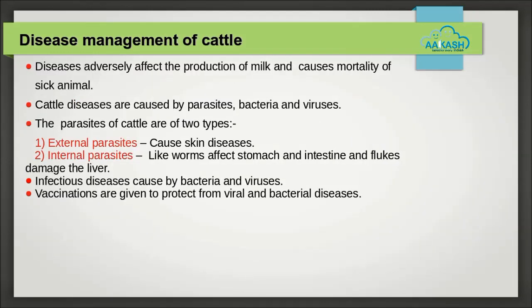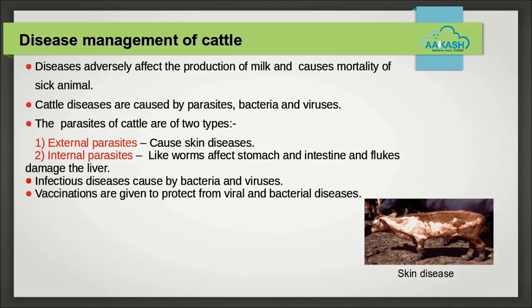Disease management of cattle: healthy animals feed regularly and have normal posture. Diseases adversely affect milk production and cause mortality of sick animals. Cattle diseases are caused by parasites, bacteria, and viruses. Parasites are of two types: 1. External parasites — they live on the skin and cause skin diseases. 2. Internal parasites — examples are worms and flukes; worms affect the stomach and intestine while flukes damage the liver.